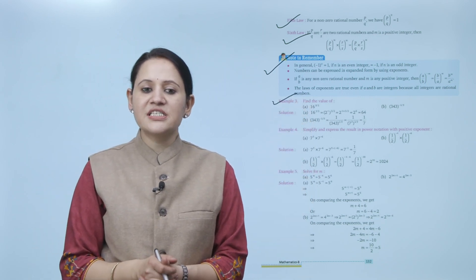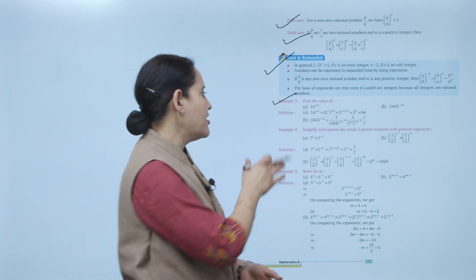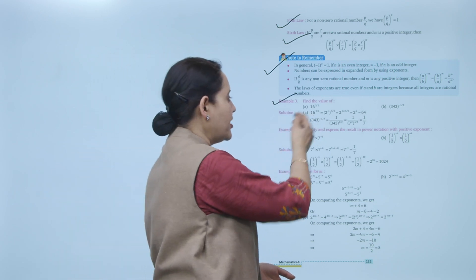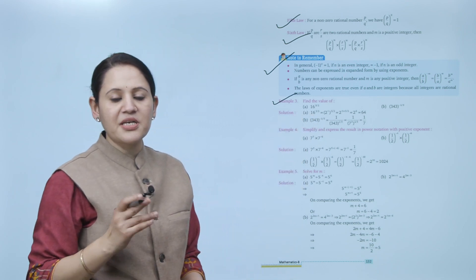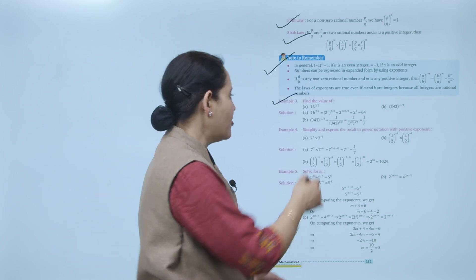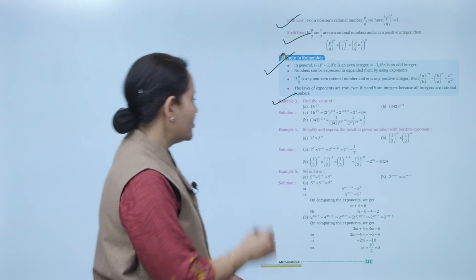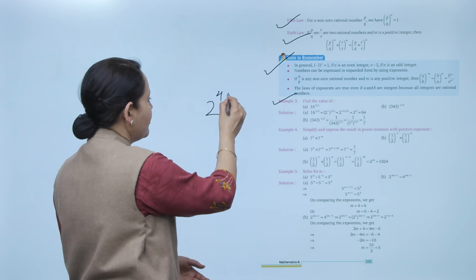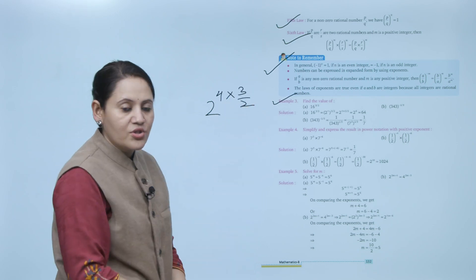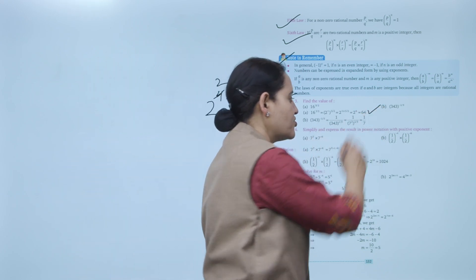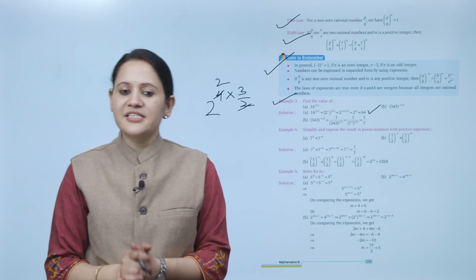Now an example: find the value of 16 to the power 3/2. We know that 16 can be written as 2 to the power 4. So 16^(3/2) becomes (2^4)^(3/2). Multiplying the powers: 4 × (3/2) = 6. So we get 2 to the power 6, which equals 64. That is our answer.